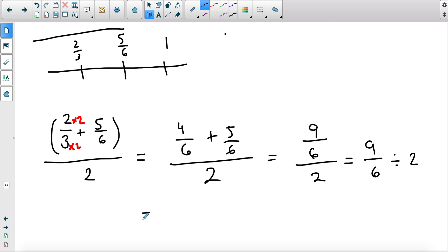Again we use the rules for division, so we have 9 over 6 times 1 over 2, and that's simply 9 over 12. We can't simplify this any further, and so this is the rational number between 2 over 3 and 5 over 6, right in the middle.